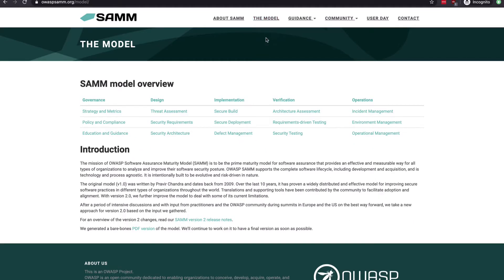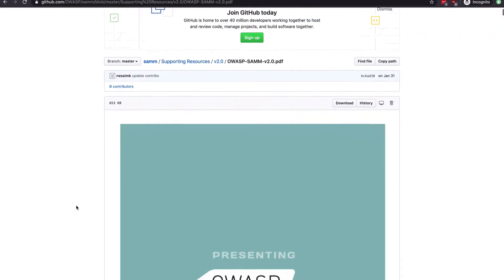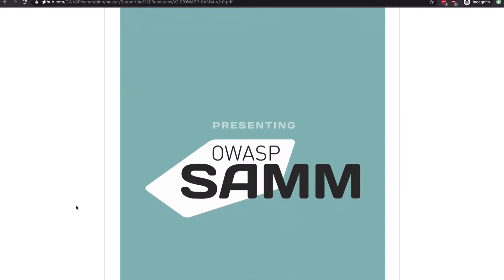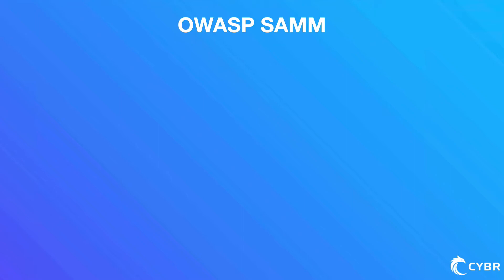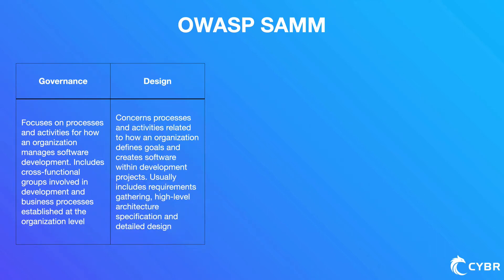This makes SAMM a great tool to help analyze your organization's current security stance so that you can define iterations to improve and show progress with actual measurements. At the highest level, SAMM defines five critical business functions — categories of activities related to software development. The first is governance, which focuses on processes and activities for how an organization manages software development, including cross-functional groups and business processes established at the organizational level. The second is design, which concerns processes related to how an organization defines goals and creates software — including requirements gathering, high-level architecture specification, and detailed design.